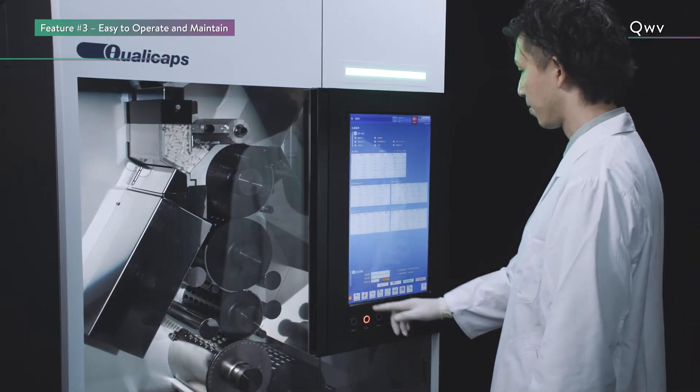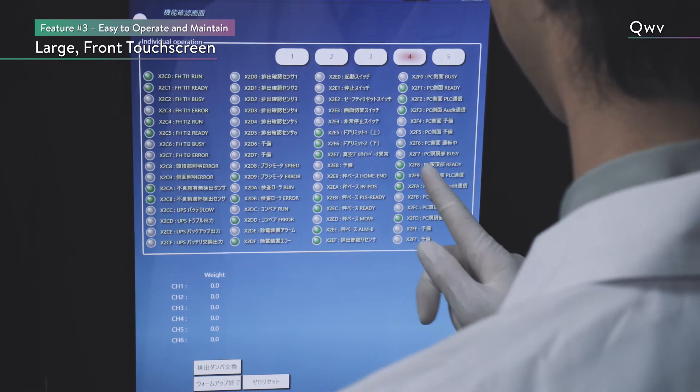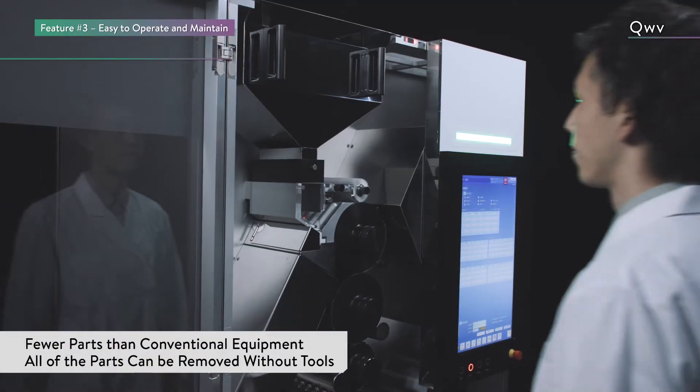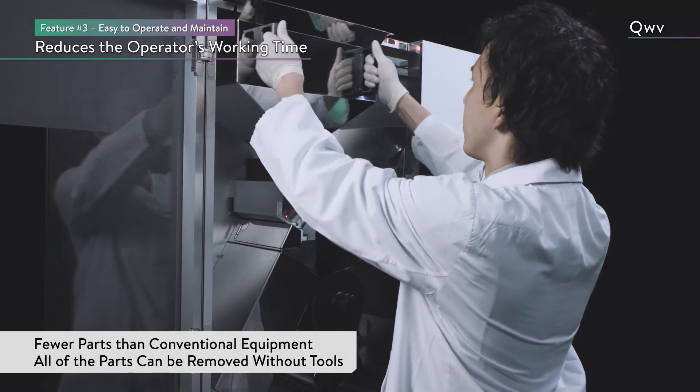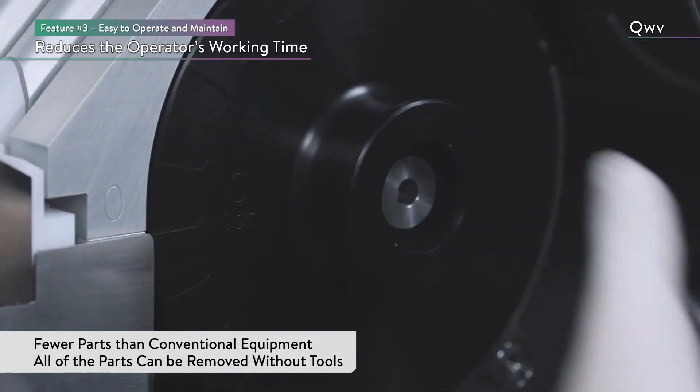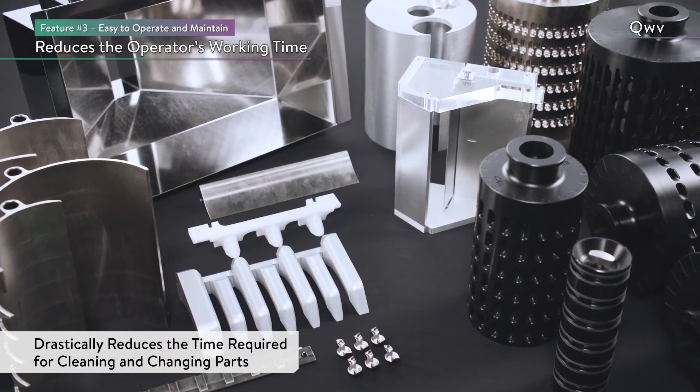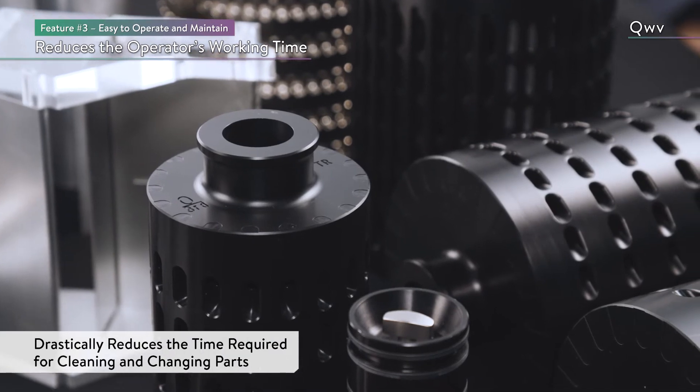The CUVE can easily be operated and configured from a large touch screen on the front. In addition, it has fewer parts than conventional machines, and all of the parts can be removed without the use of tools, which drastically reduces the time required for cleaning and changing parts.